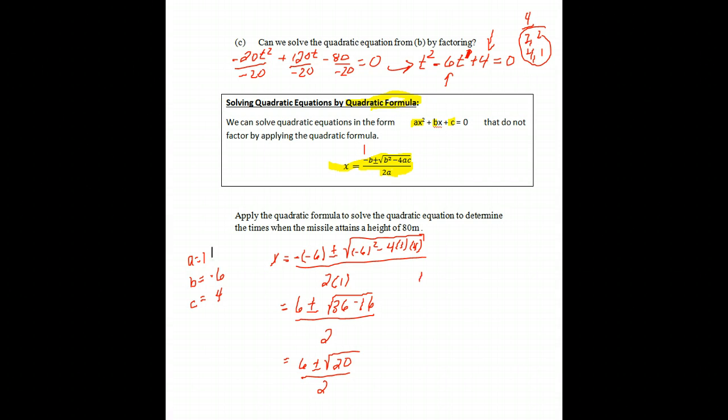And we'll end up with two answers. The first answer is going to involve 6 plus square root 20, divide by 2. And the second answer, and that's what the plus or minus means here, is that you will end up with two answers here. And now plug that into the calculator.